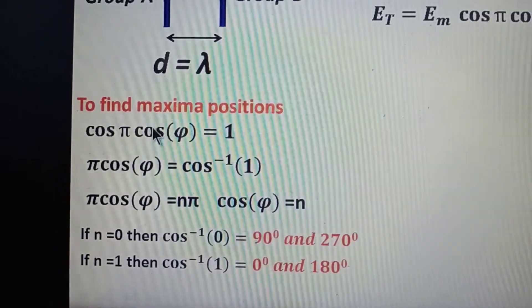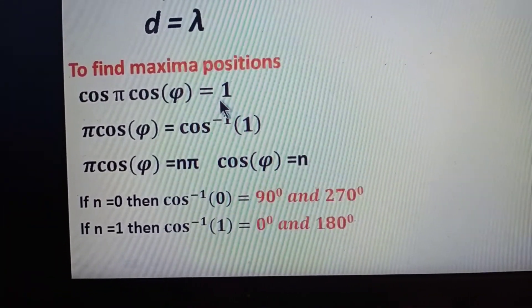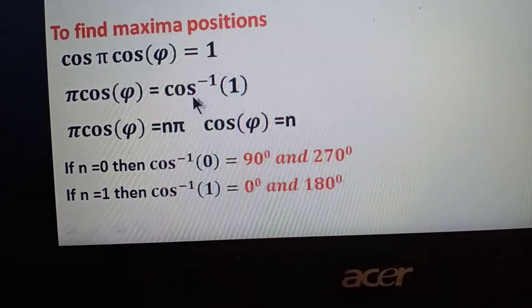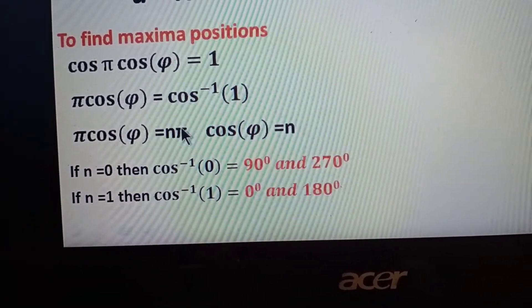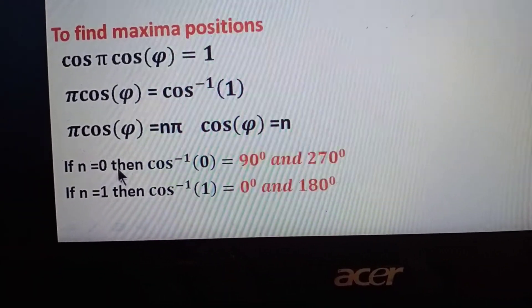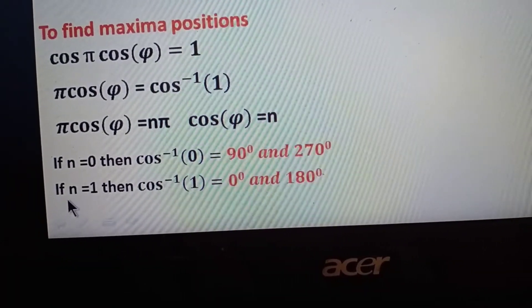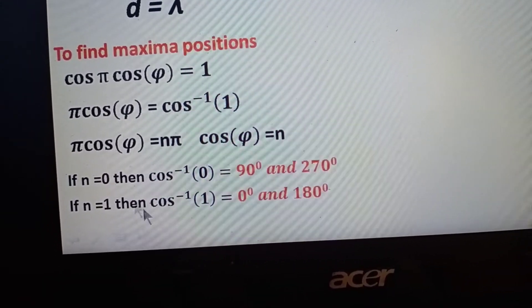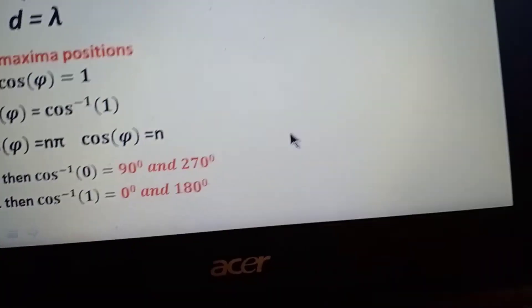For the maxima of the group pattern, we set cos(pi * cos(phi)) = 1, so pi*cos(phi) = cos⁻¹(1) = n*pi, giving cos(phi) = n. For n = 0: phi = cos⁻¹(0) = 90° and 270°. For n = 1: phi = cos⁻¹(1) = 0° and 180°. So the maxima positions are at 90°, 270°, 0°, and 180°.